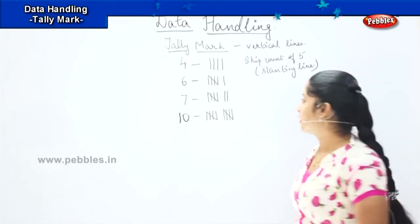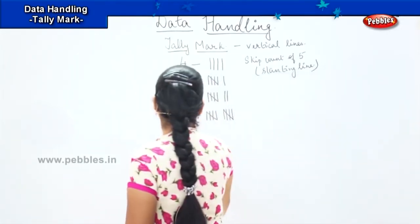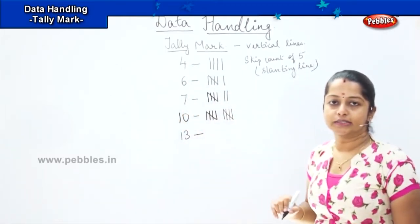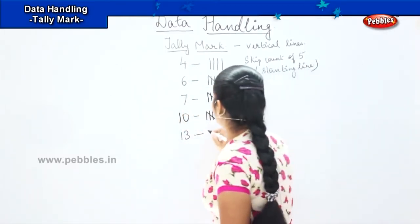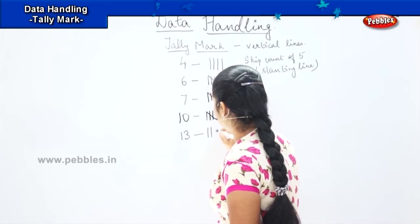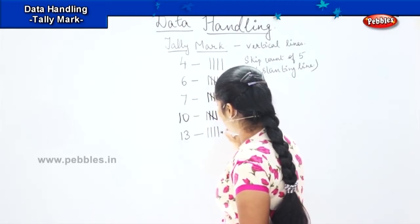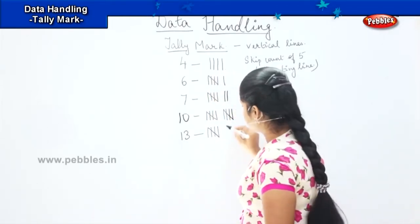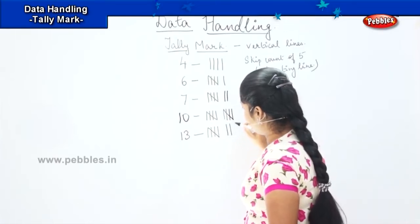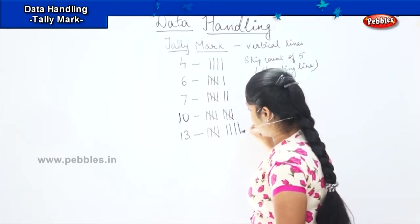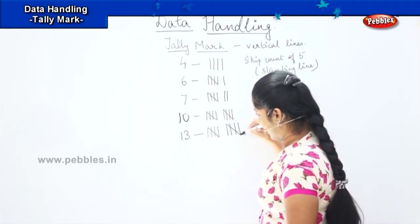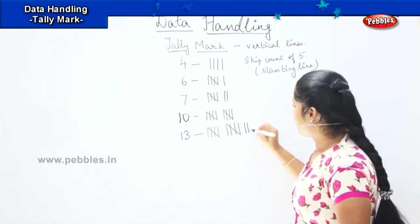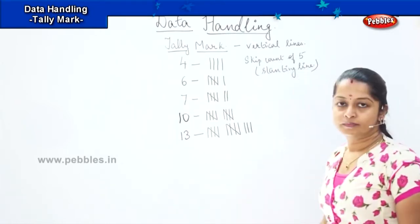Is it clear, children? Now if I want to draw say 13, how will I draw? Can you help me? 1, 2, 3, 4, then 5, 6, 7, 8, 9, 10. Again a slanting line 11, 12, and 13. Is it clear?